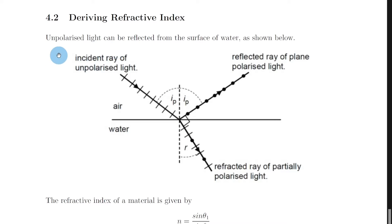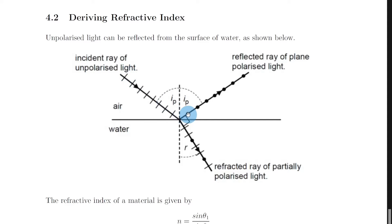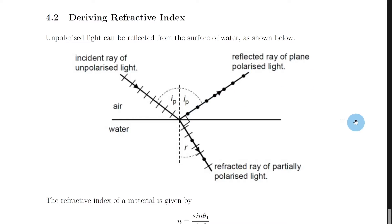Unpolarized light such as sunlight can be reflected from the surface of water as shown below. Here we have air and then water — that's our air-water boundary — and then we have a ray of unpolarized light which is being both reflected from the water surface and transmitted through the water surface. So we have some reflection and some refraction going on. Remember the definition of Brewster's angle is the angle of incidence which causes the reflected light to be fully plane polarized.